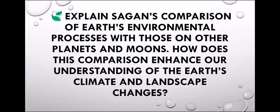In our previous video we discussed short answer questions. The question is: explain Carl Sagan's comparison of Earth's environmental processes with those on other planets and moons. How does this comparison enhance our understanding of Earth's climate and landscape changes?